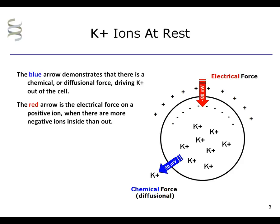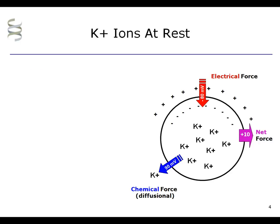As is always the case, there are more potassium ions inside the cell than outside. The blue arrow illustrates that on the basis of that, there is a chemical, or diffusional force, driving potassium out of the cell. The net force on potassium is the sum of the electrical and chemical forces.